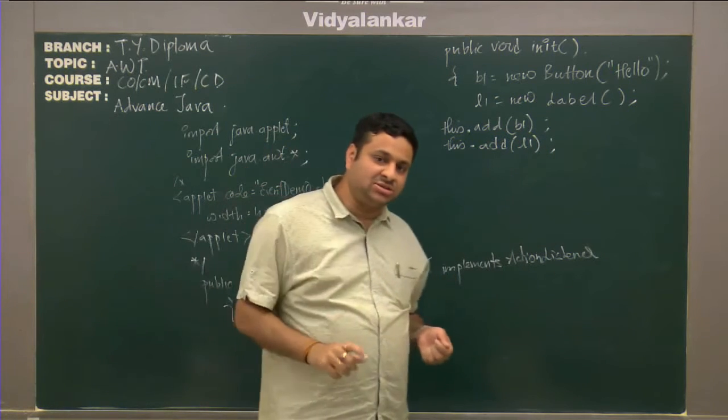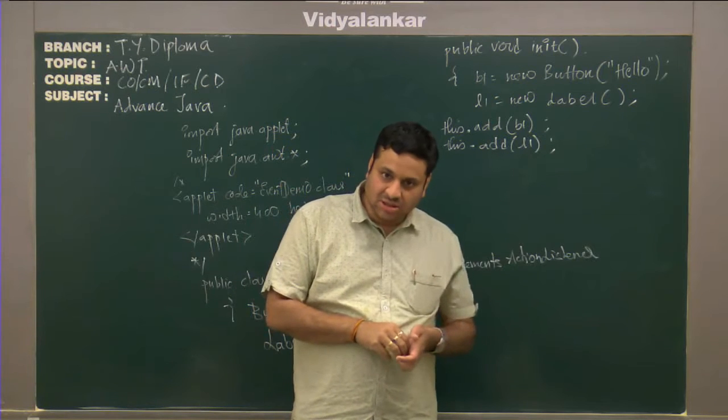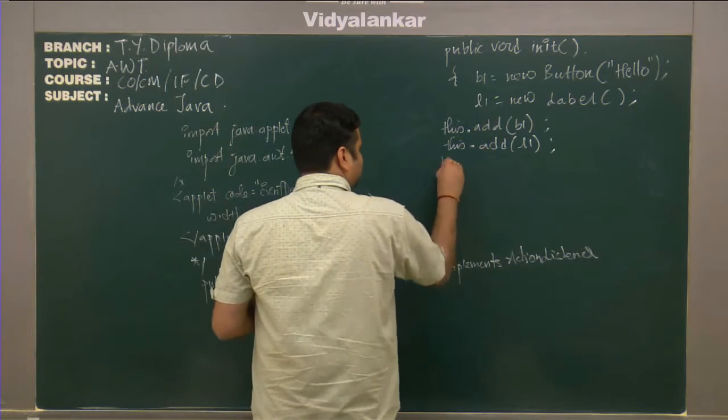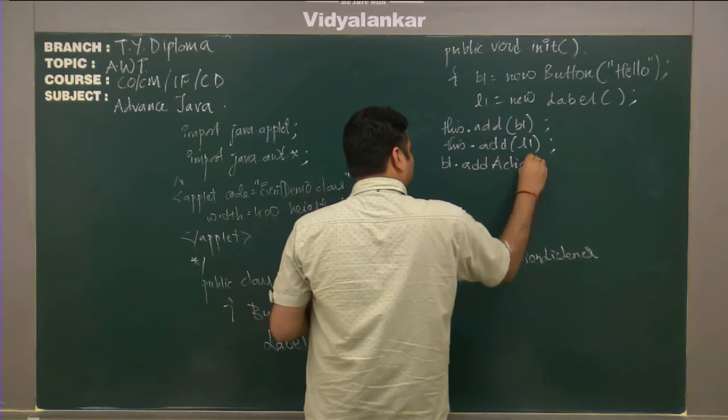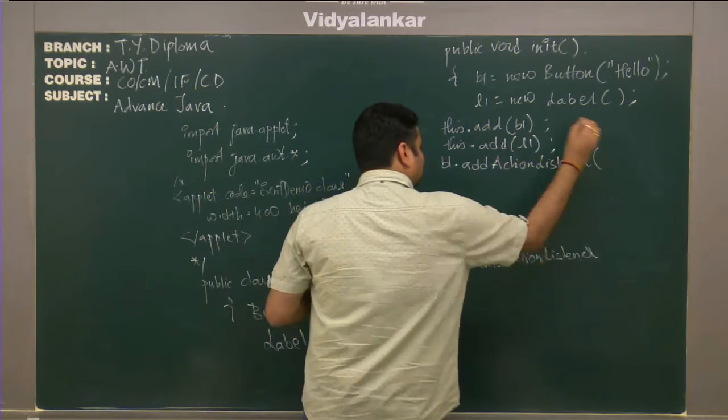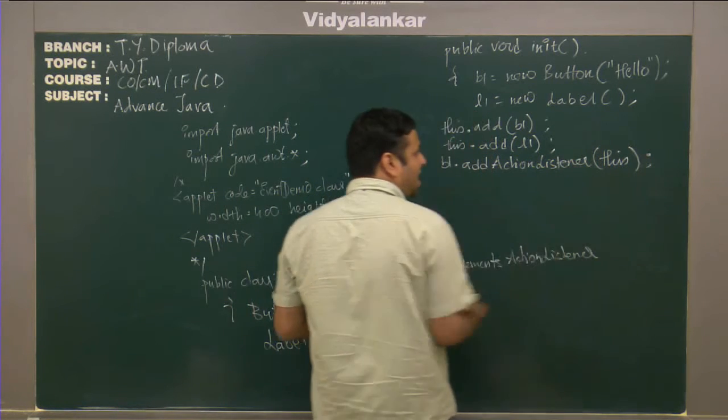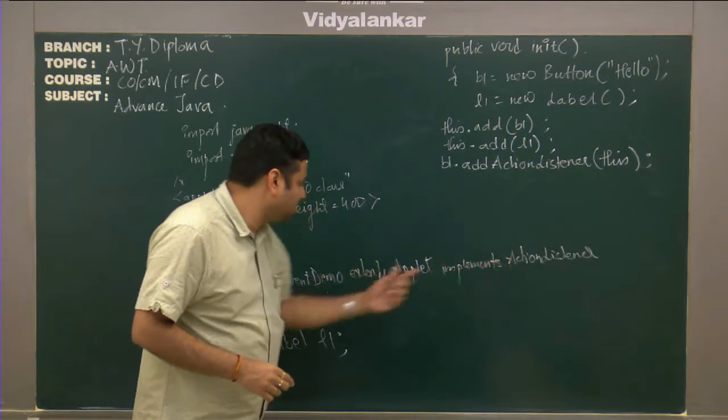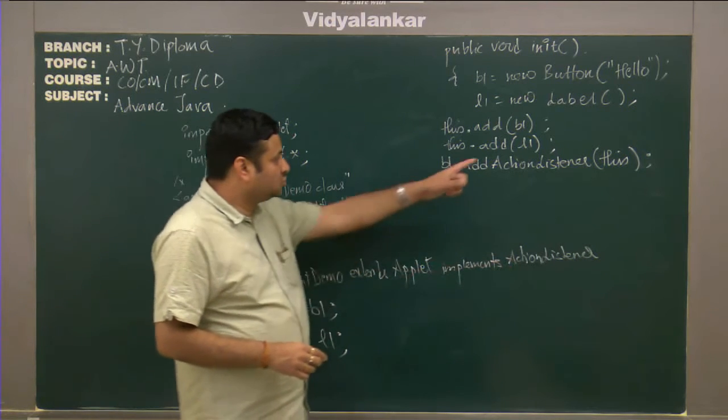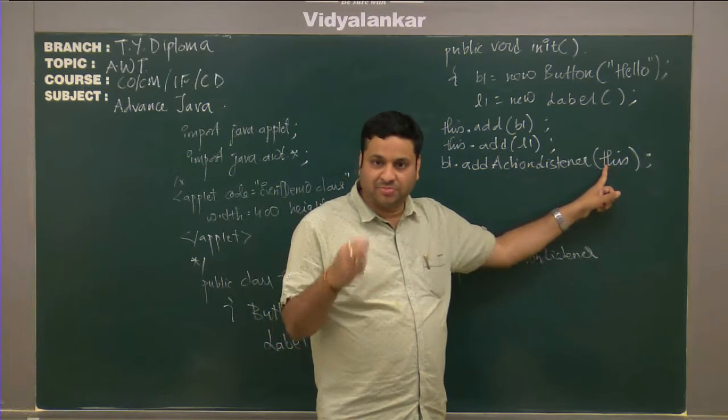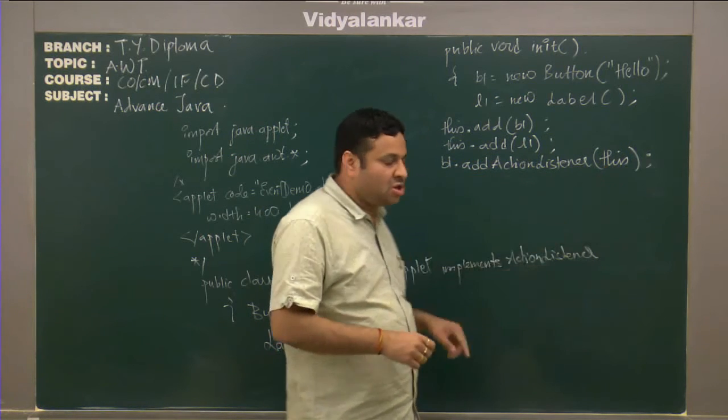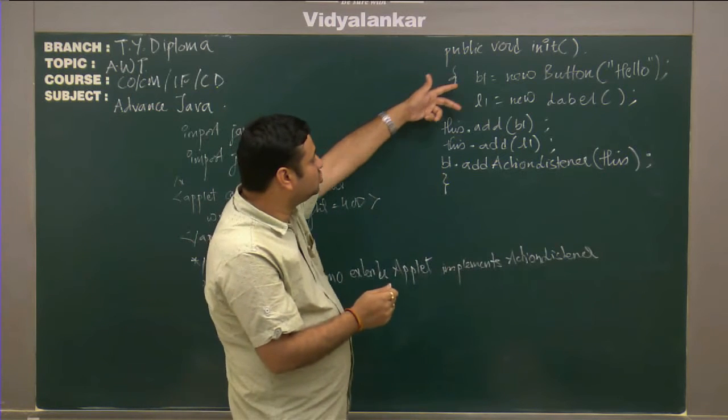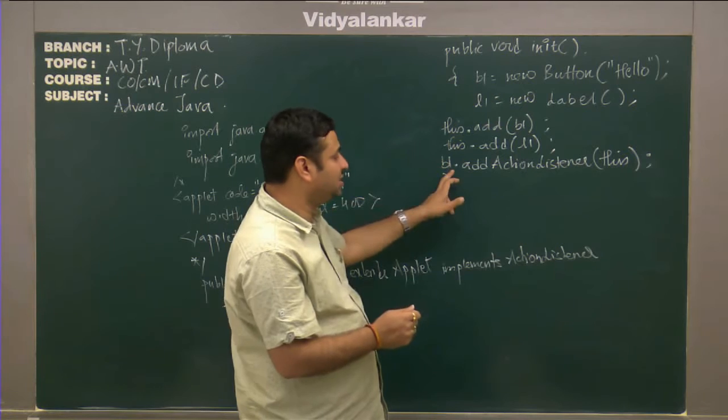The event will be generated by the button. For a button to generate that kind of event, it needs to get registered with the listener. We'll have B1 dot add action listener, and here we need to pass the object of the class that implements the listener. It's our own class event demo, so we'll pass this. This represents current object or the calling object. As soon as my applet is loaded for execution, we'll have these two components added, and we'll have a listener registered with the button B1.